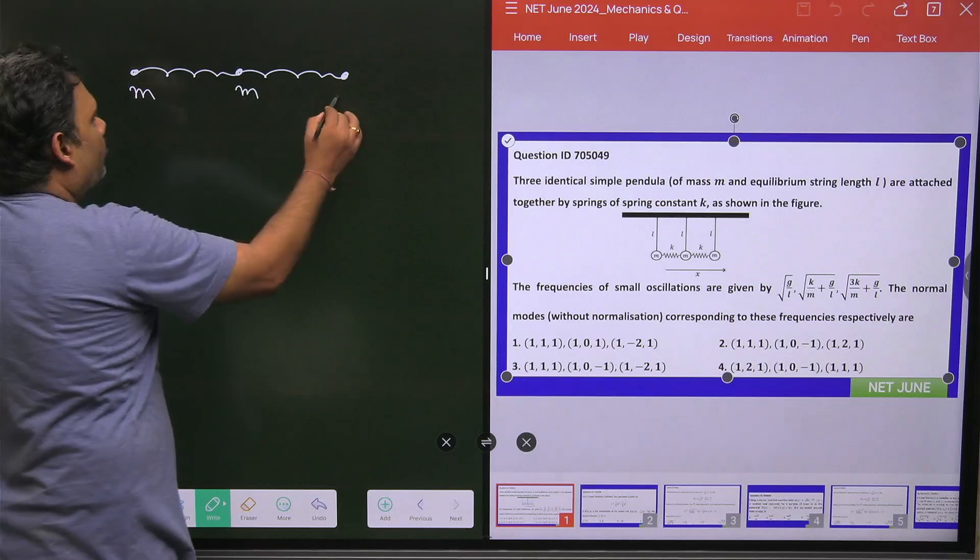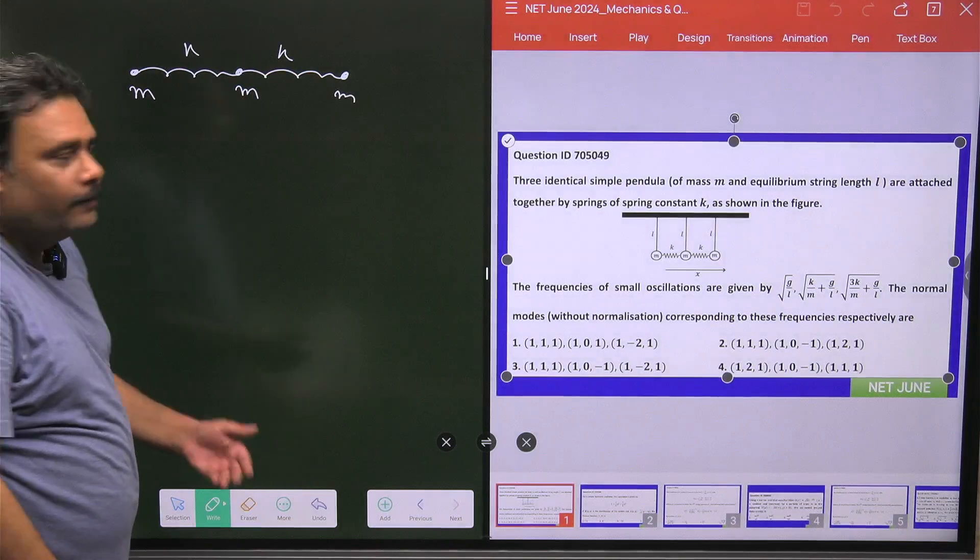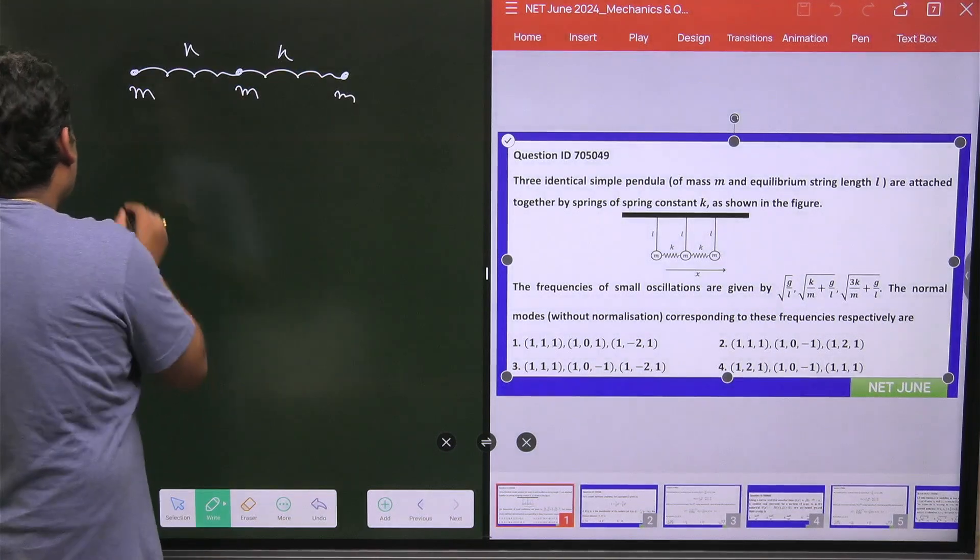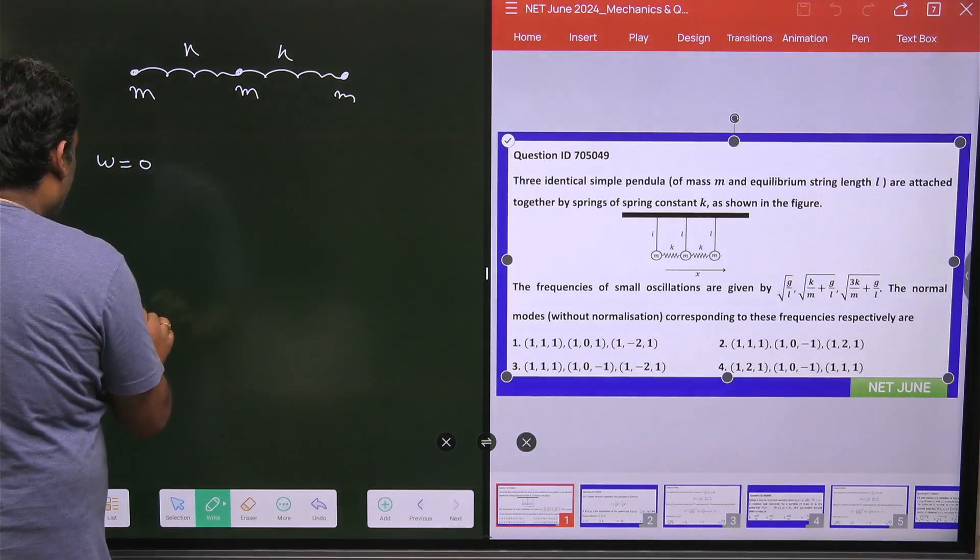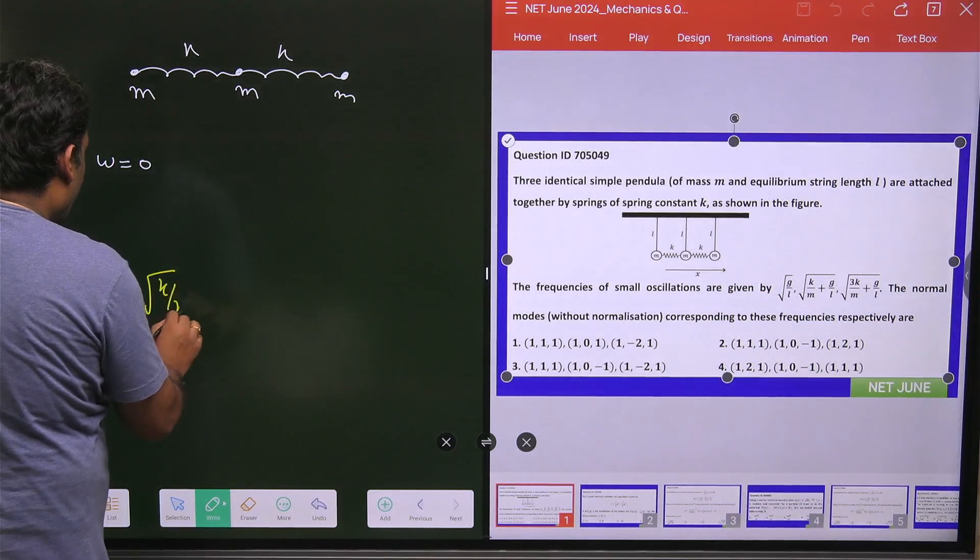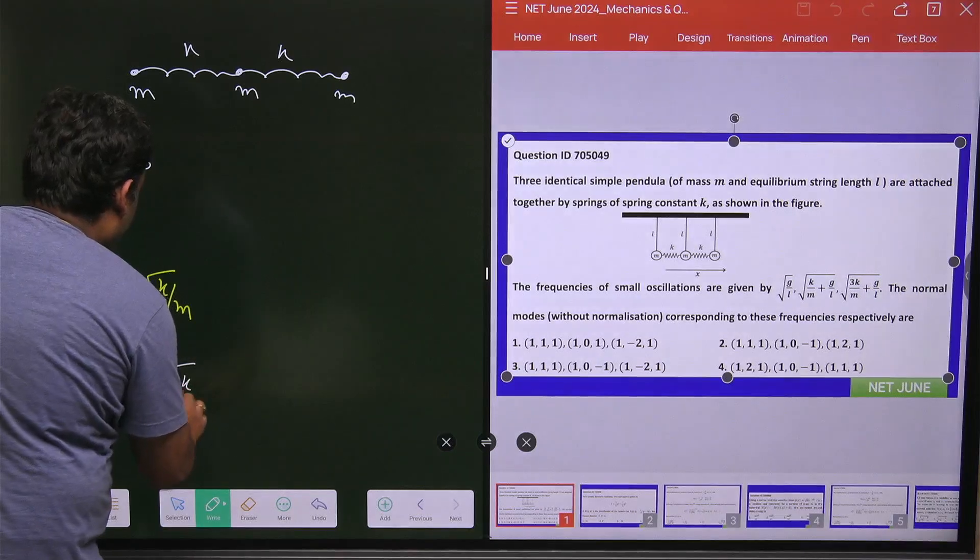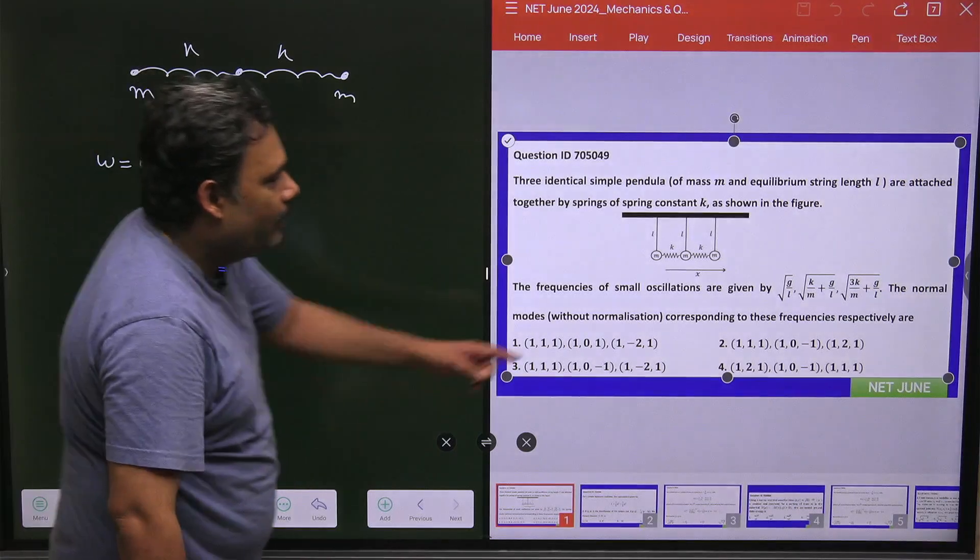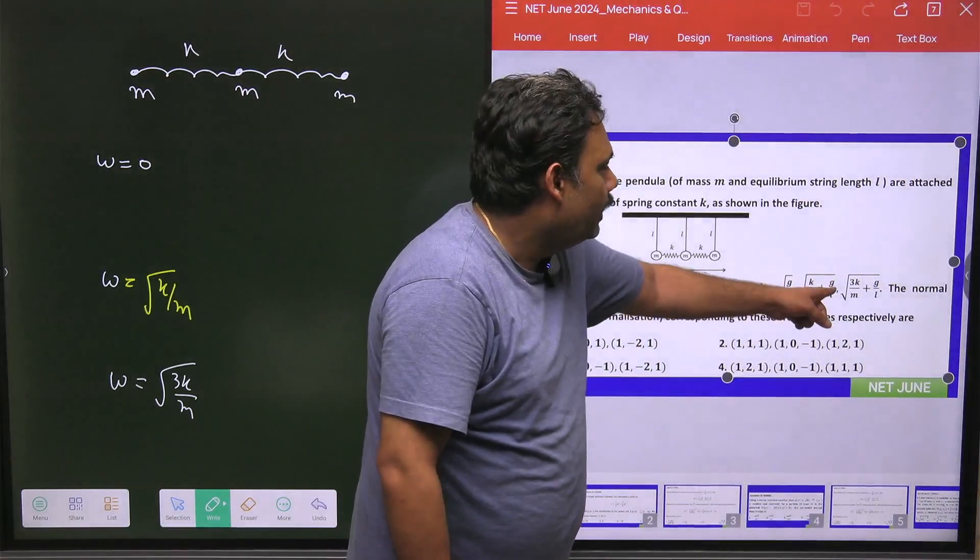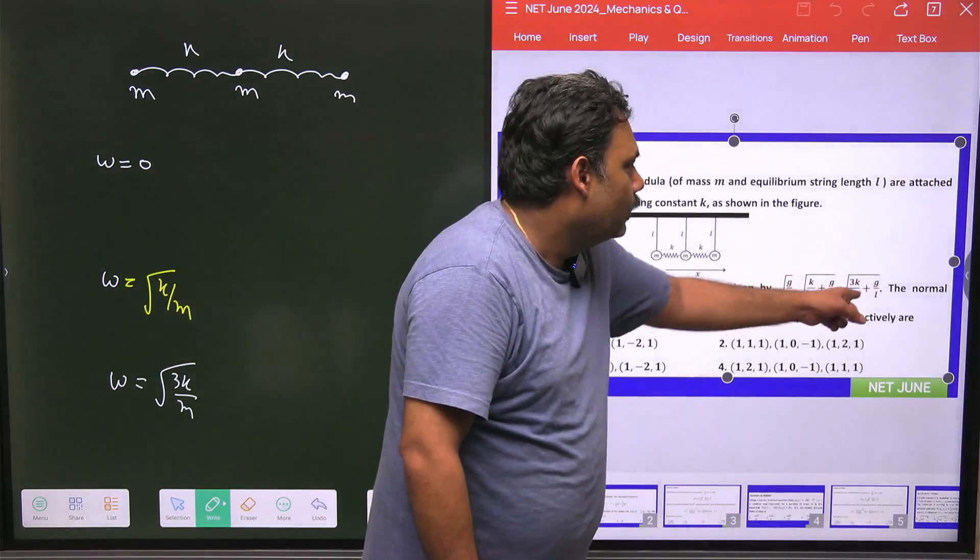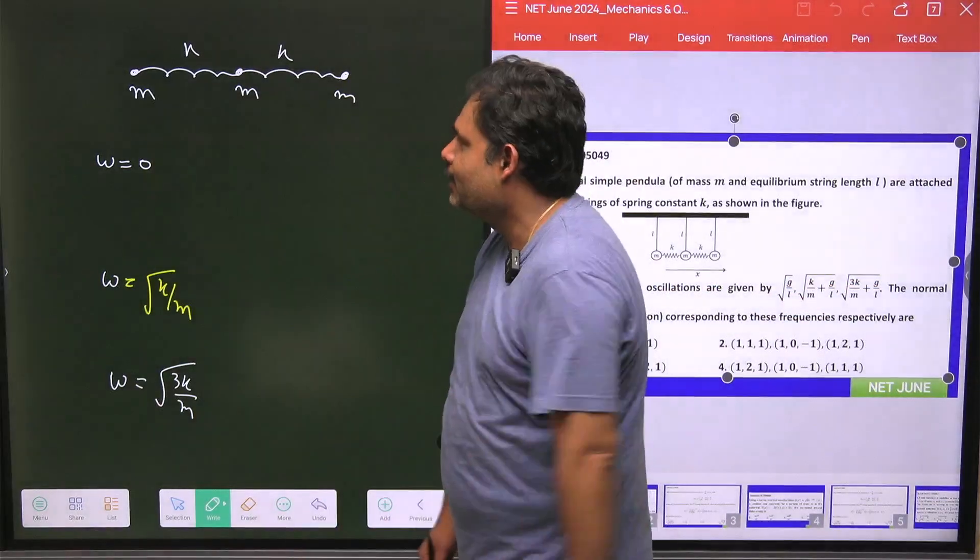And you know what will be the normal frequency for this triatomic molecule. This is a part of theory, I can say, and we have done all this derivation. So normal frequency for this one is omega equals zero, omega equals root under K by M, and omega equals root under 3K by M. Now you can see it very nicely. If G by L is zero, then this will be zero. If G by L—that is K by M and then you have 3K upon M. So you can see that analysis is exactly correct.